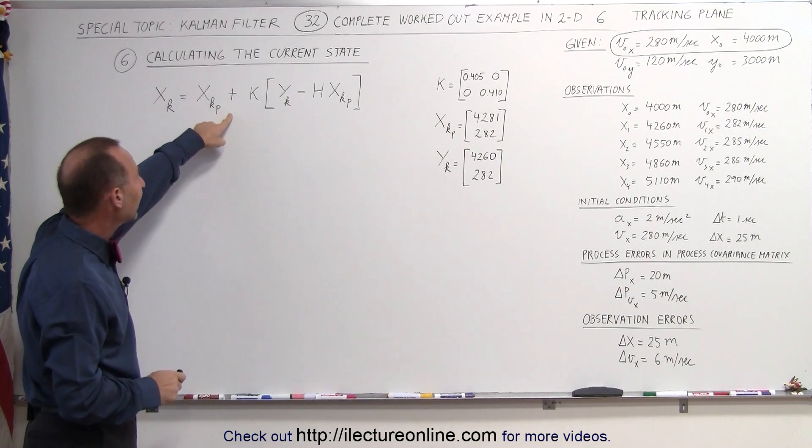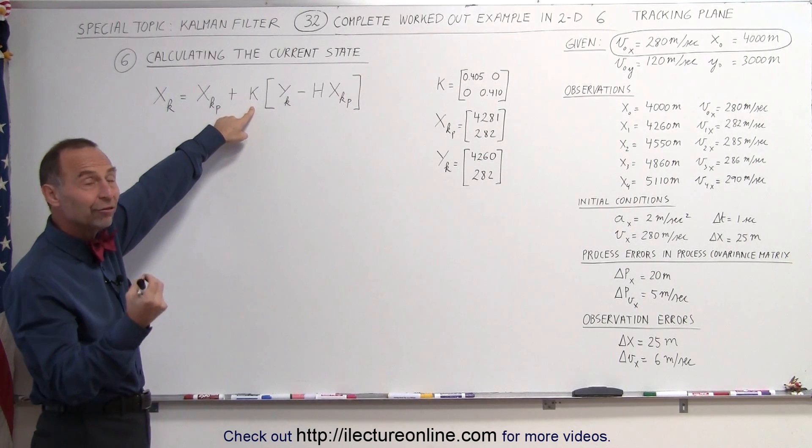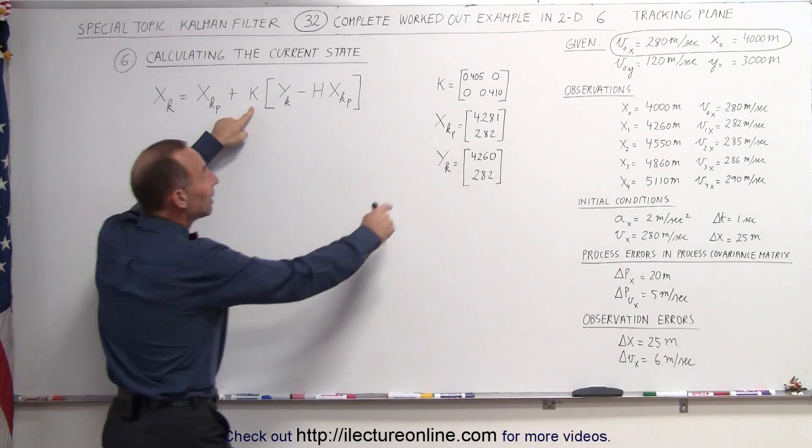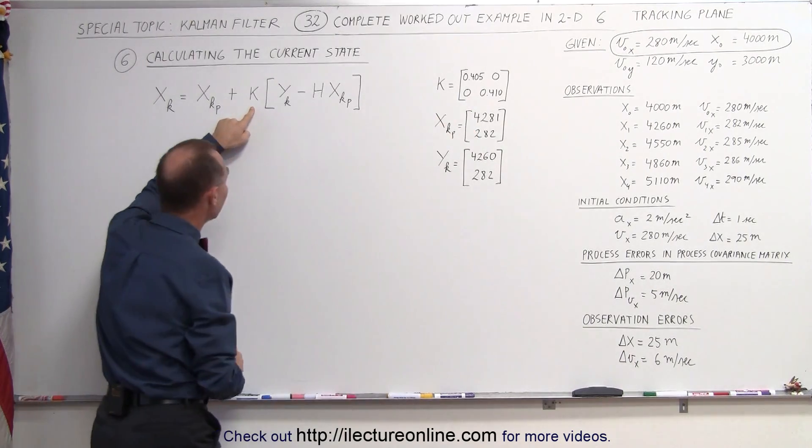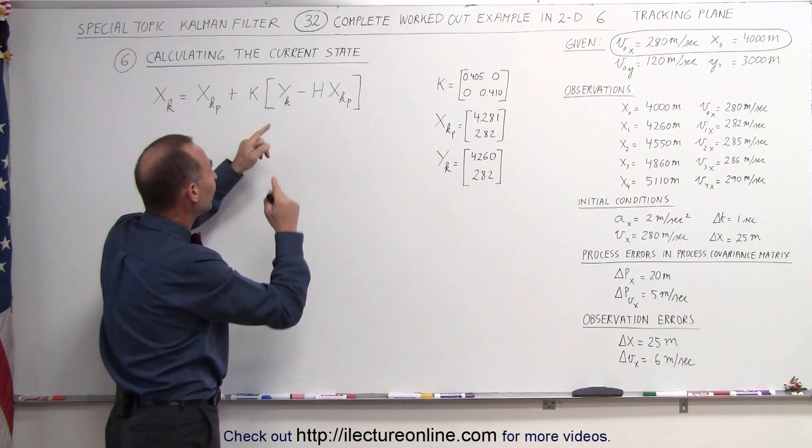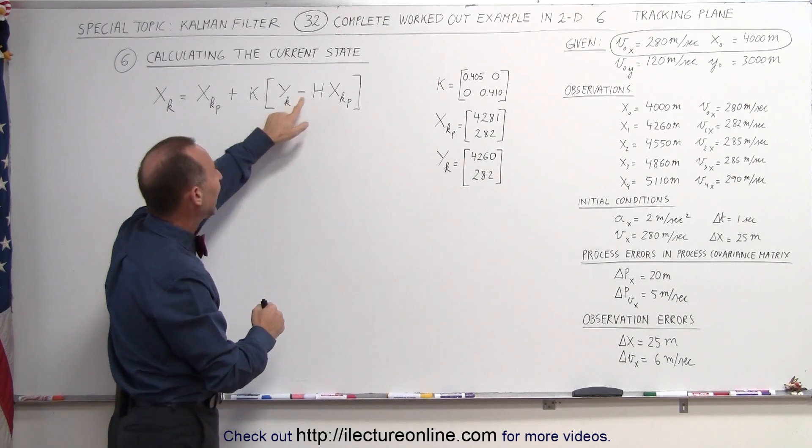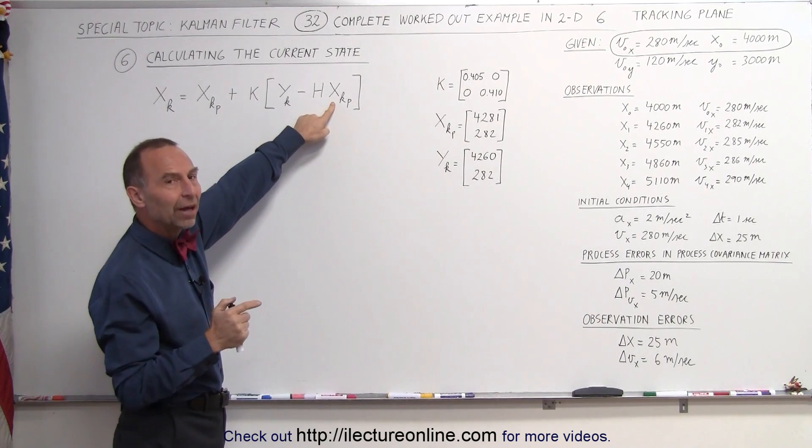Here's the equation. We take the predicted state and add to that the Kalman gain, which is a fraction, basically think of the Kalman gain as a fraction between 0 and 1, and we multiply that times the difference between the measured values and the predicted values.